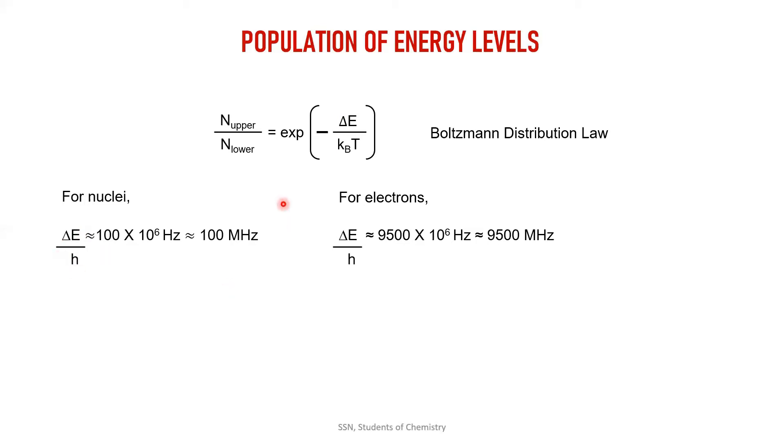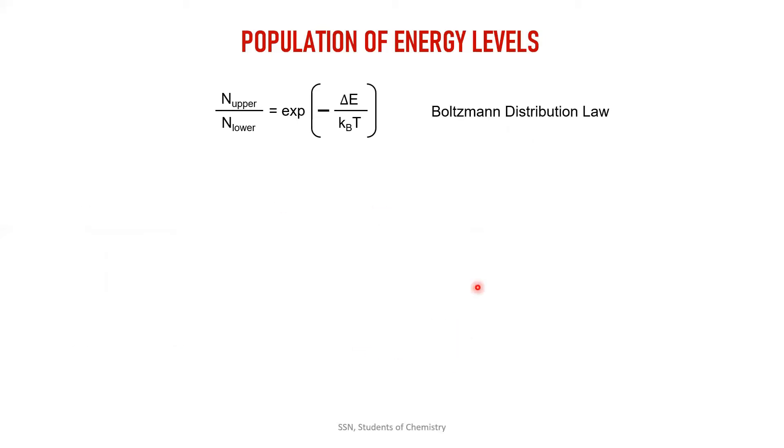After another mathematical steps, we will reach del E is 6.62 into 10 power minus 26 joule for nuclei, and del E is 6.29 into 10 power minus 24 joule for electrons. I'm going to substitute my del E value.